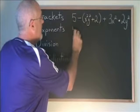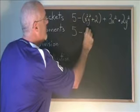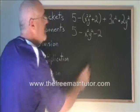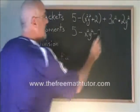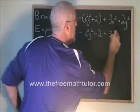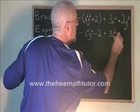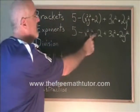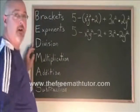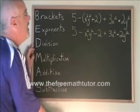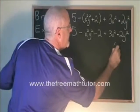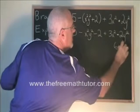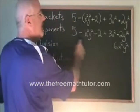I end up with 5 minus x squared y squared and minus 2. The rest of the question I just copy down. Now I have subtraction, subtraction, addition, multiplication. The multiplication has to be done first. 3 times 2 is 6, and x squared times y squared is x squared y squared.